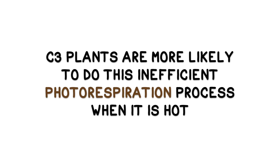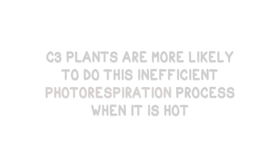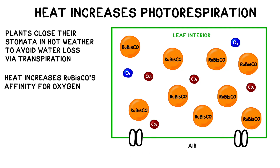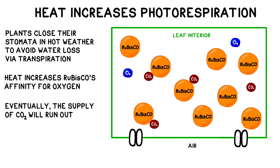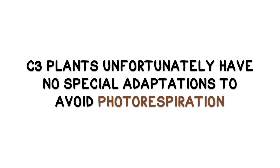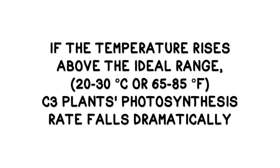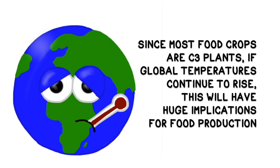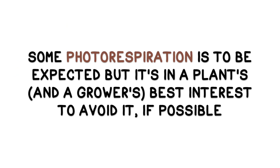C3 plants are more likely to do this inefficient photorespiration process when it's hot. First, in hot weather, C3 plants close their stomata to avoid drying out. And second, Rubisco has a greater affinity for oxygen at higher temperatures, so new CO2 isn't coming in and eventually the supply will run out. Unfortunately, C3 plants have no special adaptations to avoid photorespiration. If the temperature goes up more than a few degrees, the rate of photosynthesis in C3 plants falls dramatically.